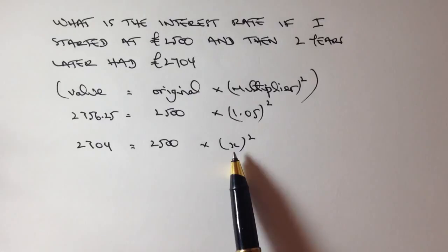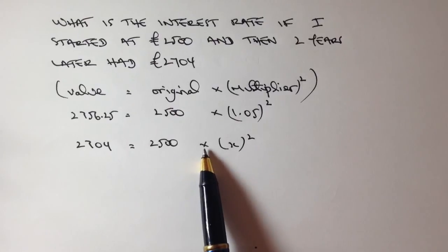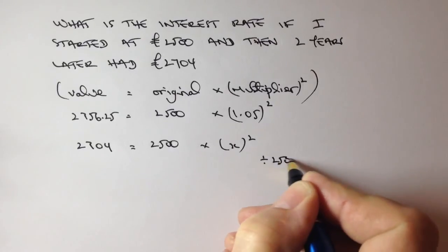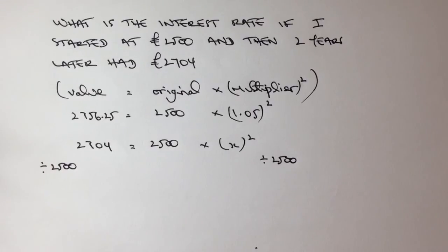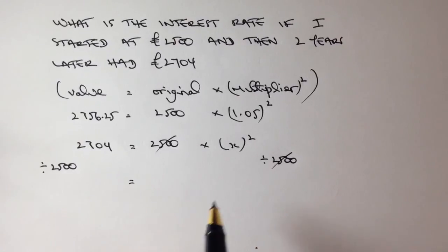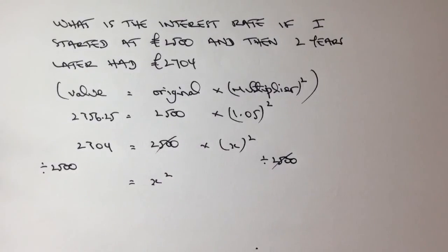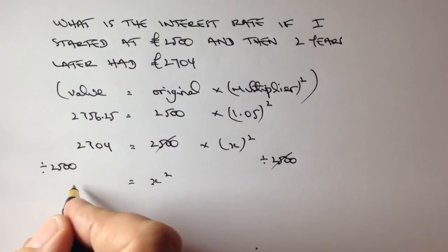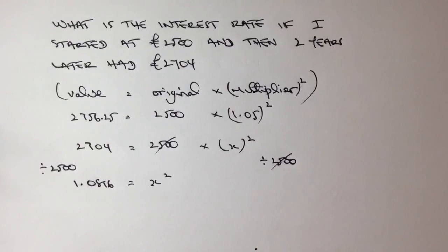So the first thing I'm going to do is get rid of this 2,500, and because it's multiplying, I'm going to divide both sides by 2,500. If I divide this side by 2,500 and this side by 2,500, it allows me then to lose this. So on this side, on the right-hand side, I've now just got X squared on its own. On this side, 2,704 divided by 2,500 is 1.0816, and that represents the value of X squared.